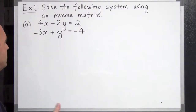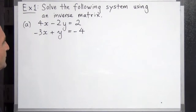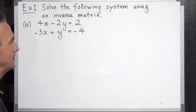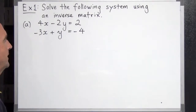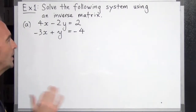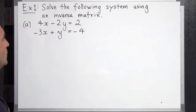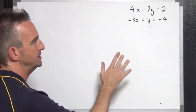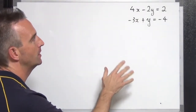Here's our first example — Example 1A. We have two equations here. What we're going to do is use matrices to solve this using an inverse matrix. Before we get started, I just want to show you one other way we can represent this problem. There's our set of equations.